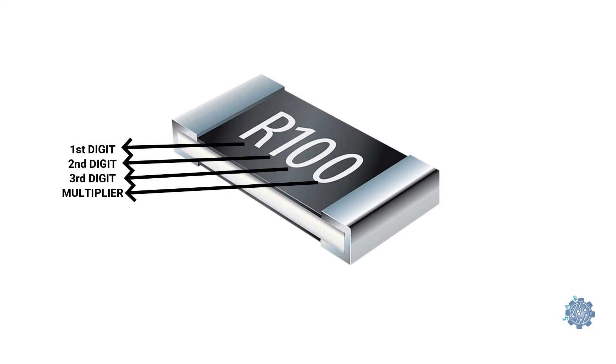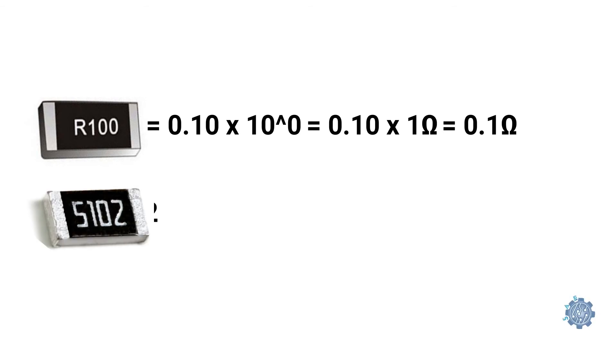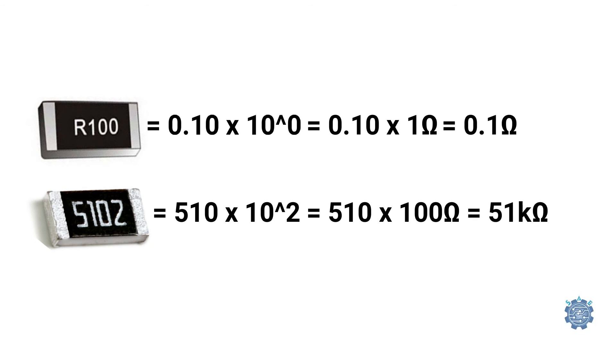R means the comma in the value. For example, R100 is equal to 0.10 multiplied with 10 to the 0 power, which is further equal to 0.10 multiplied with 1 and means 0.1 ohms. And 5102 is equal to 510 multiplied with 10 squared, which is further equal to 510 multiplied with 100 and is equal to 51 kilo ohms.